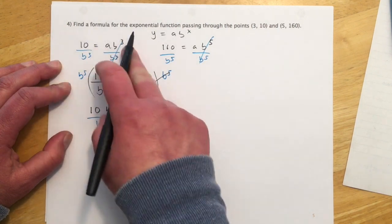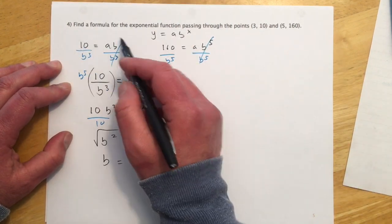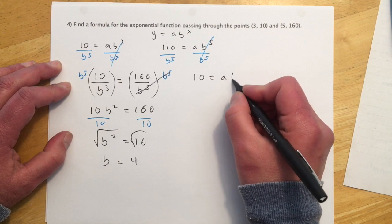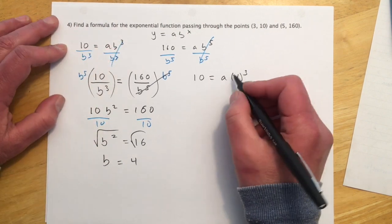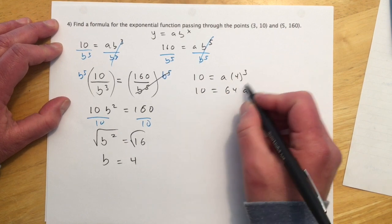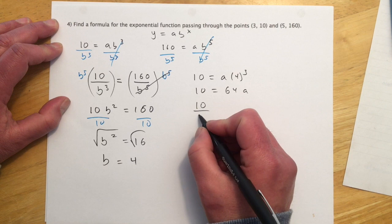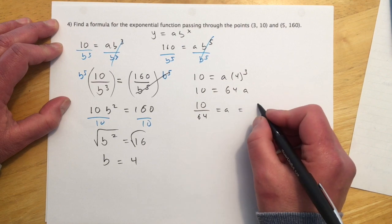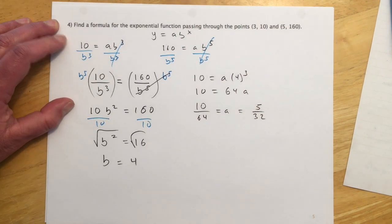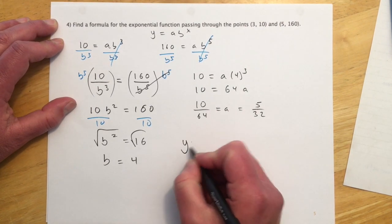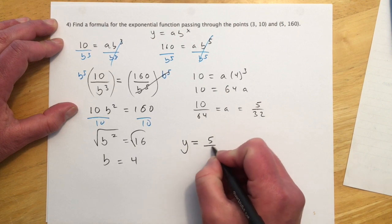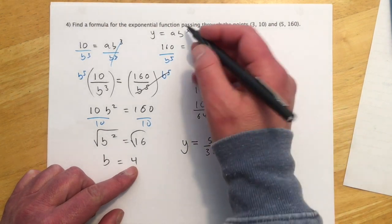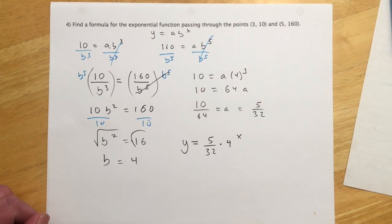And once I know B is 4, I can come back to either of my original equations and solve for A. This one has a little bit smaller numbers and powers, so I'm going to go with that. So I have 10 equals A, B is 4 to the 3rd up there. So that's 10 equals 64A. Divide the 64 over. And 10 over 64 equals A, and then I can reduce that fraction. So let me simplify that down to 5/32. So then my final on this will be y = (5/32) times 4^x. Those are A and B, and x is our variable.